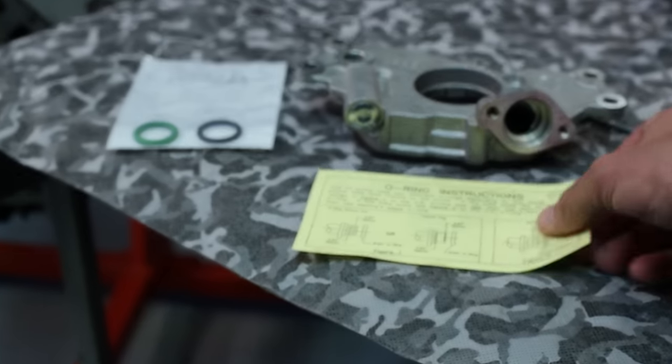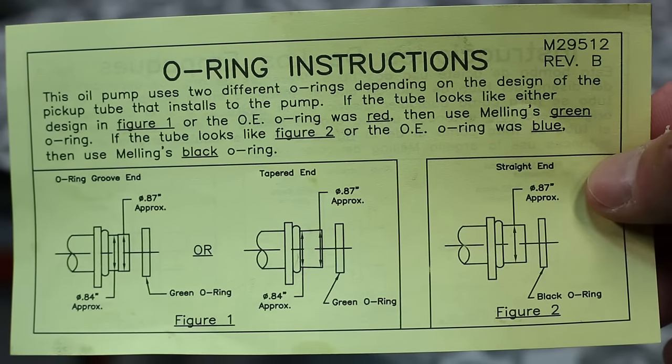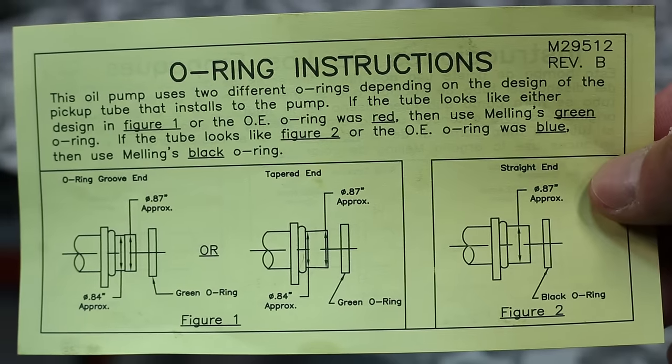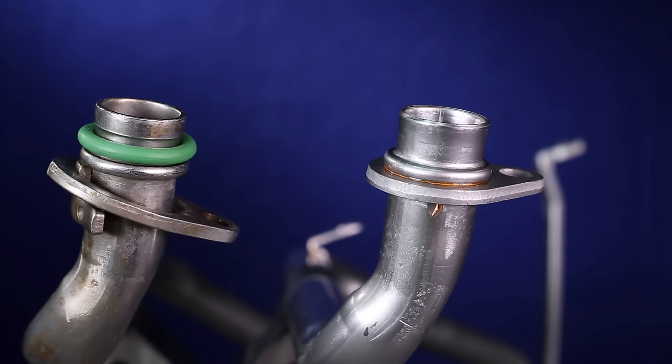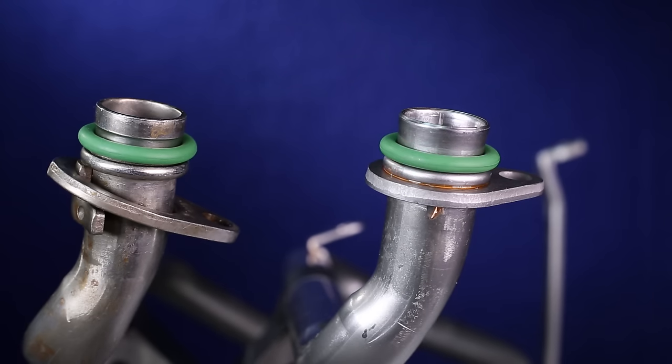First, let's look at the screen tube o-ring. Read the instructions that come with the pump and two o-rings. If the screen tube you are using has a groove or is tapered where the o-ring goes, use the thicker green o-ring. If your present OE tube has a red o-ring, use our green o-ring.